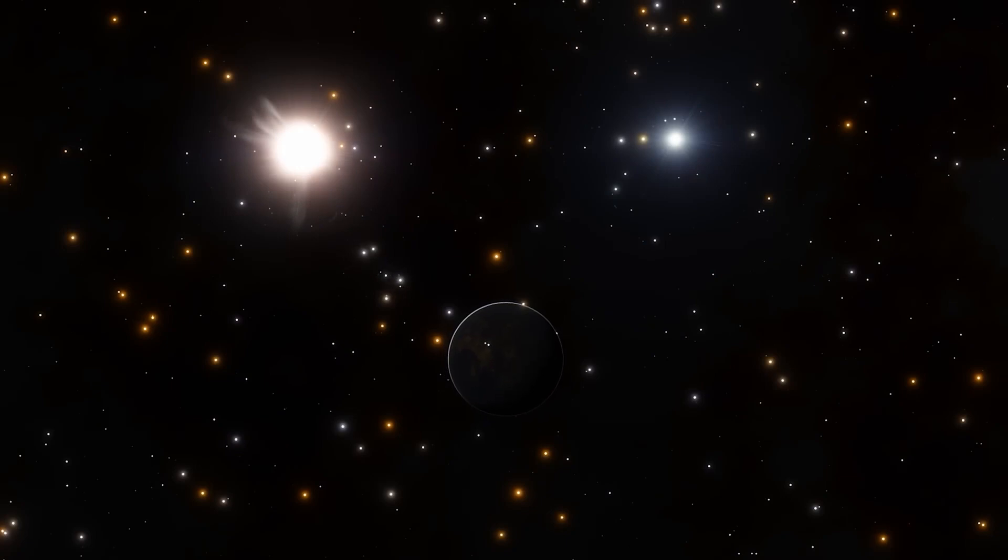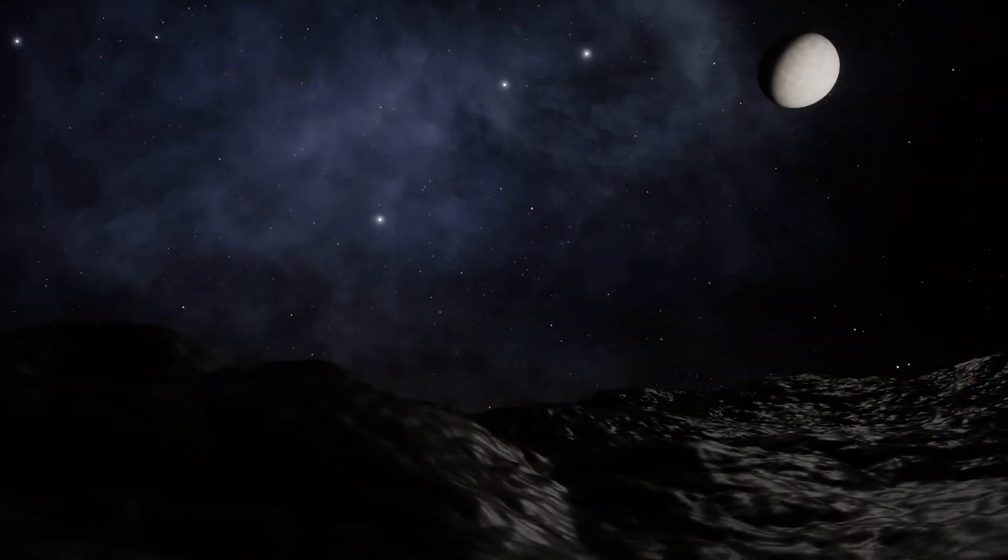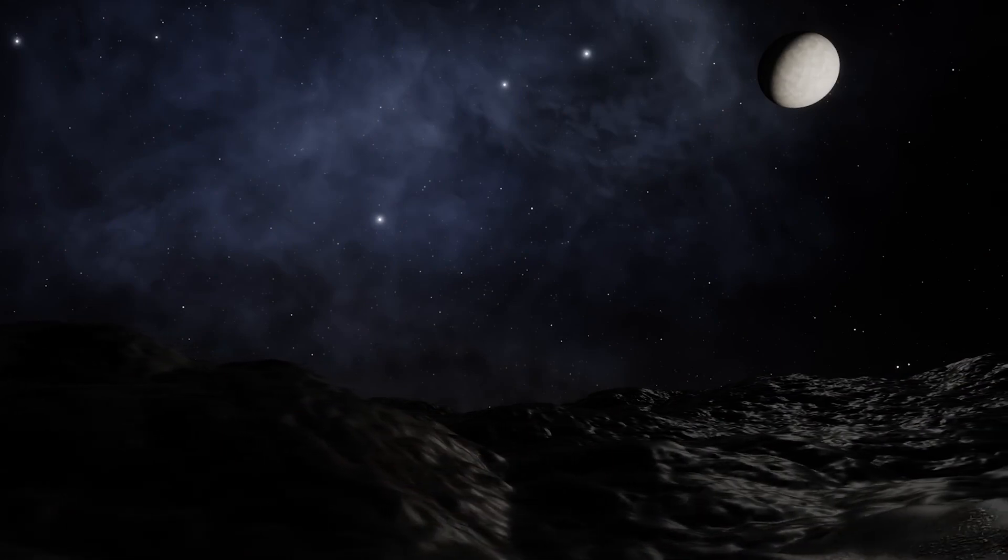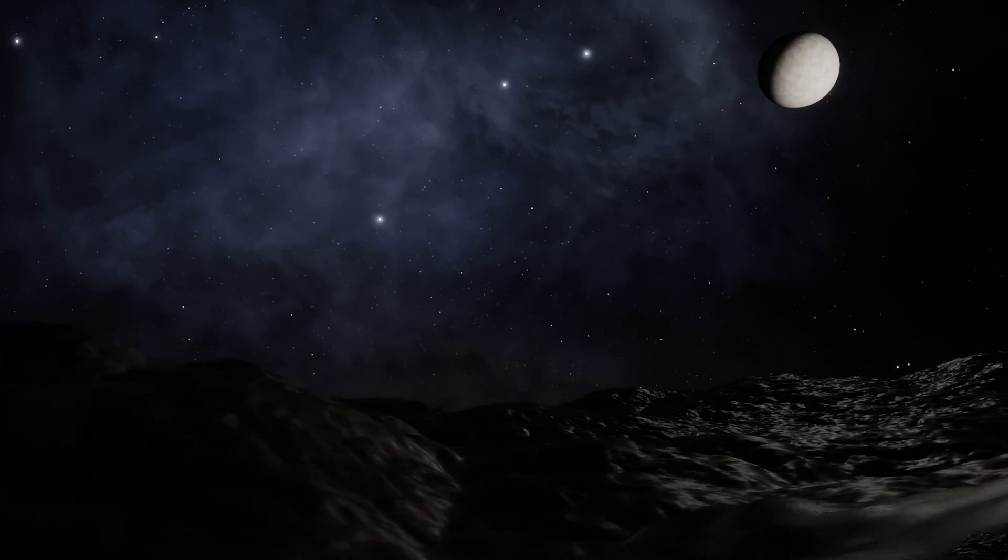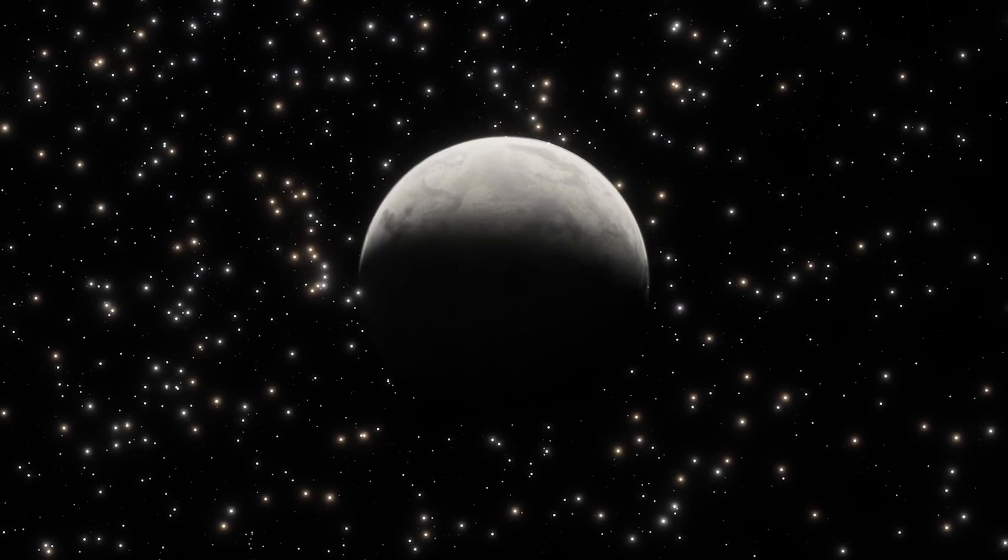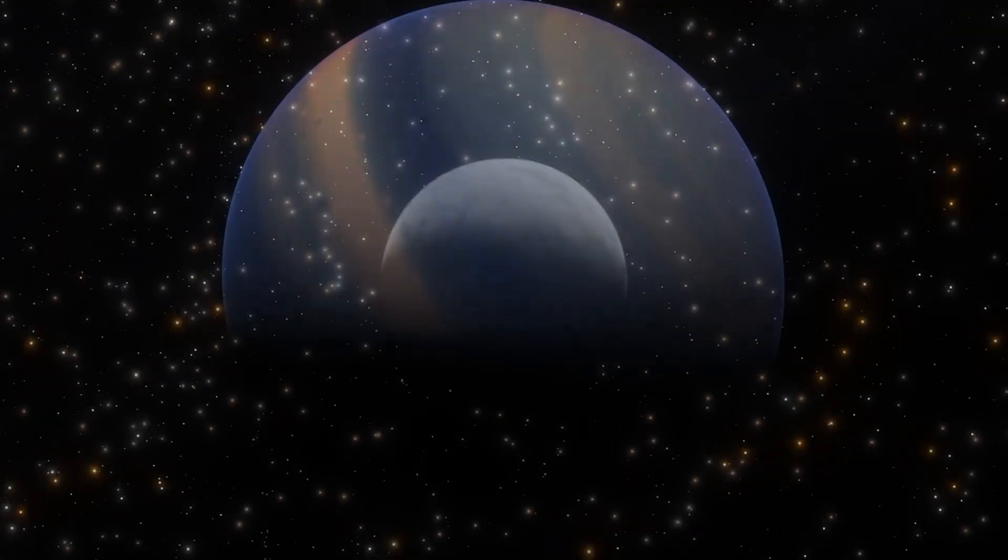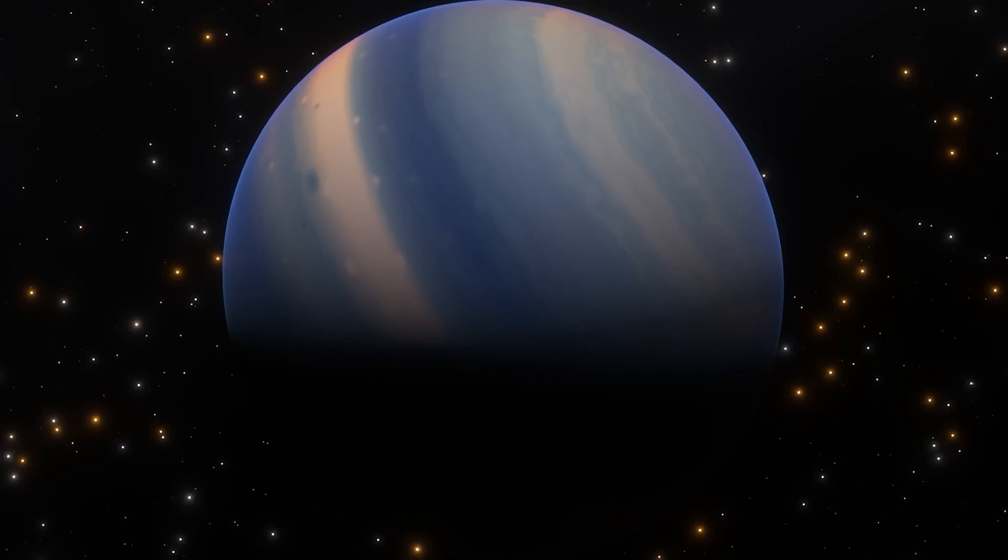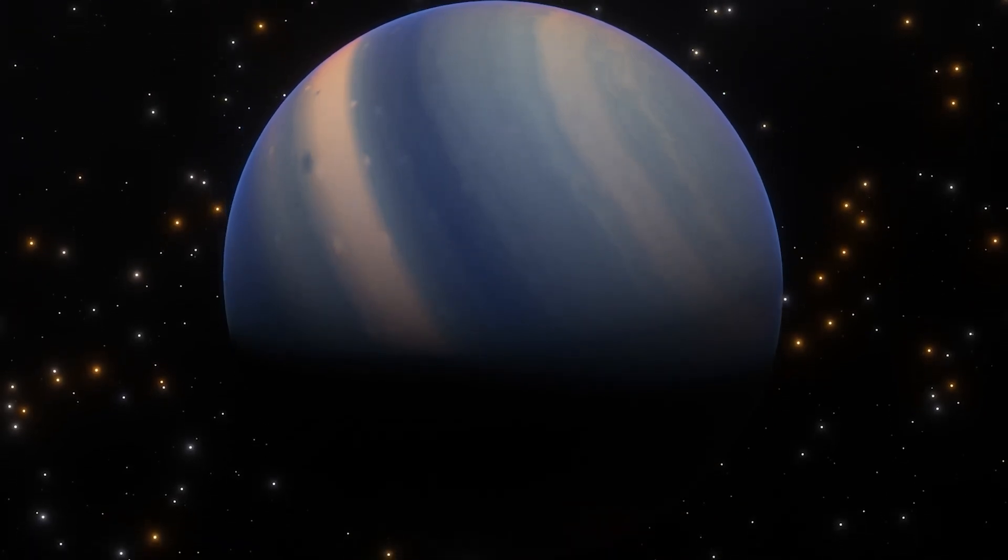Exoplanets are not just planets, they are worlds that exist outside our solar system, hidden deep in the Milky Way. Among the vast number of cosmic objects, there is an exoplanet so similar to Earth, so tantalizingly similar but enigmatic, that it could be our planet's celestial twin.